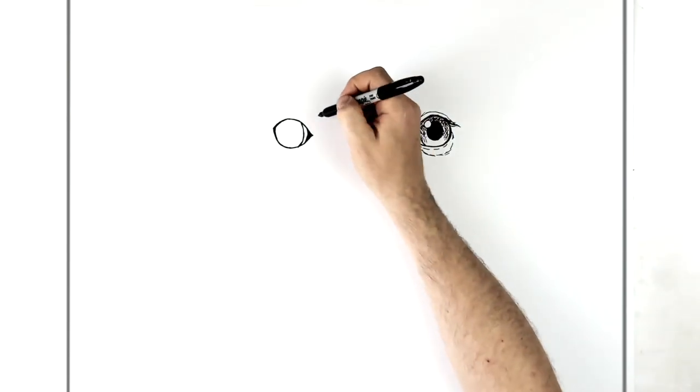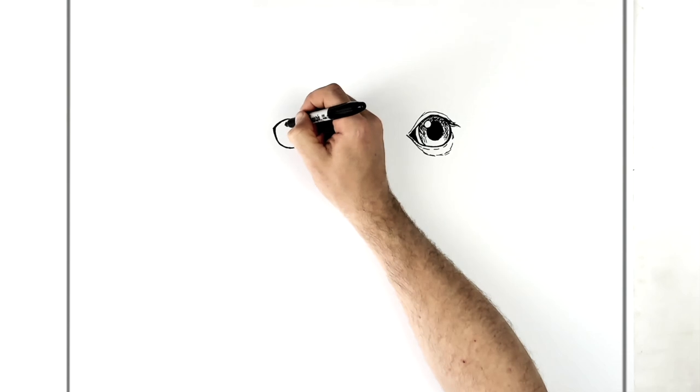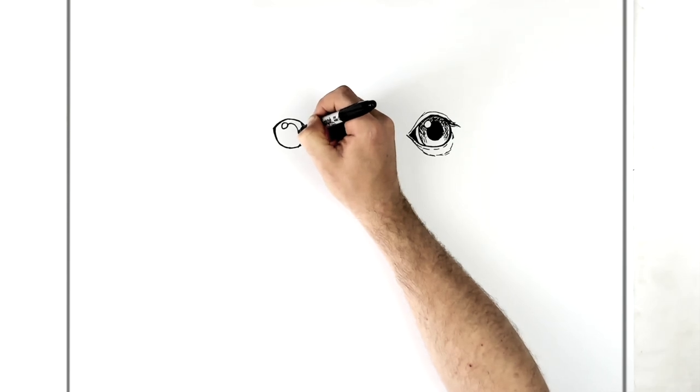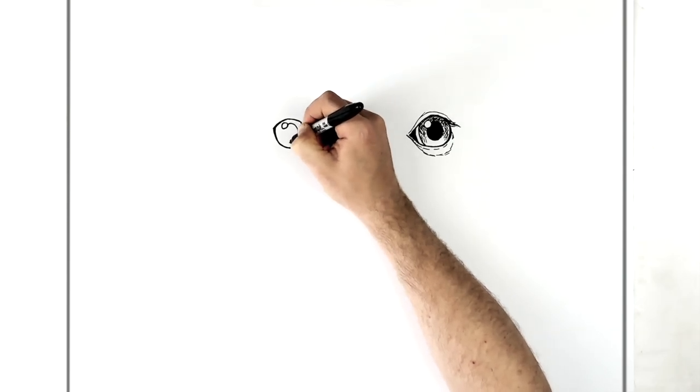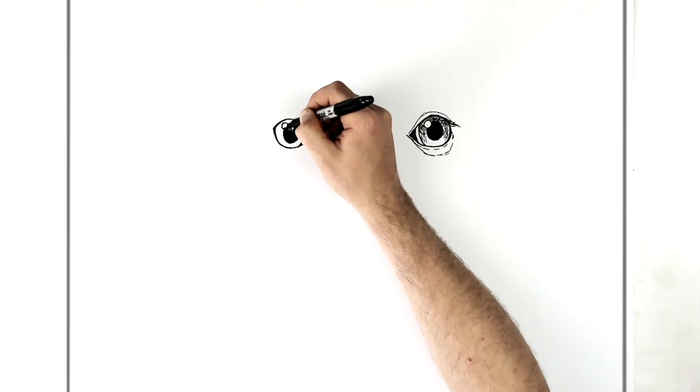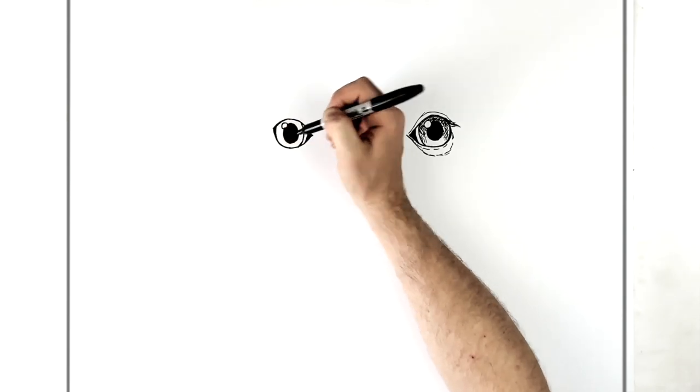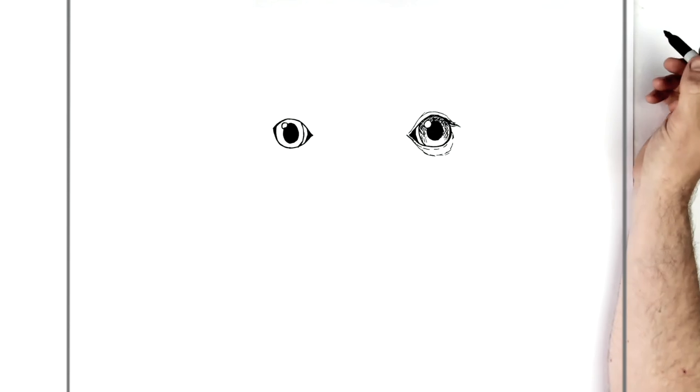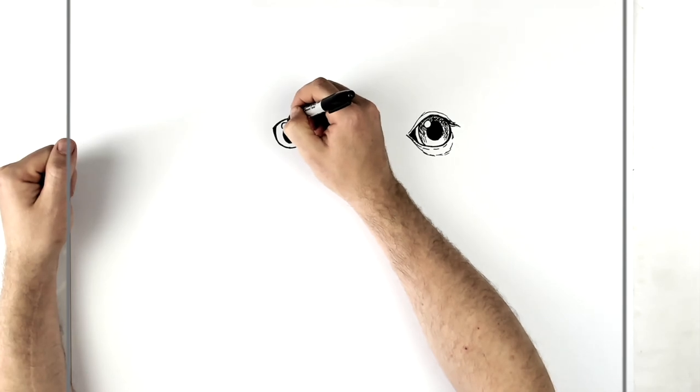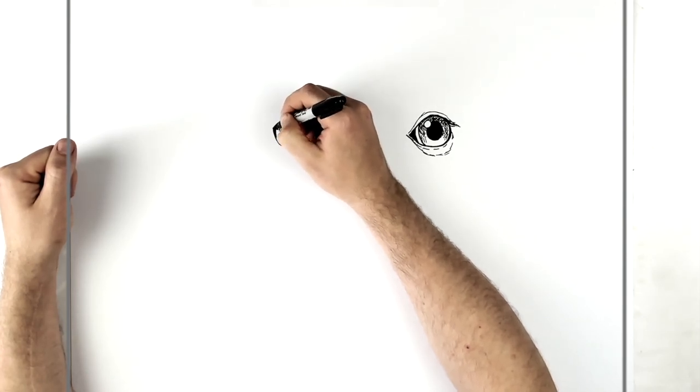And then the pupil, but again, we'll add the highlight first. So just like a white circle here and then a big pupil. Color this black. And then you can add some hatching, some shadow lines just on the top of the eye and coming down sort of here.